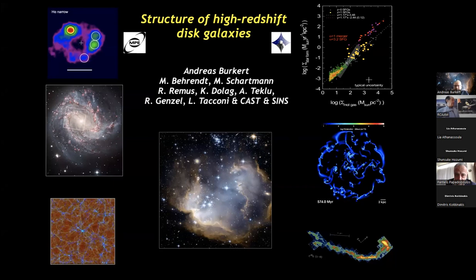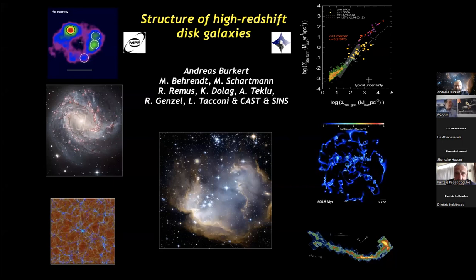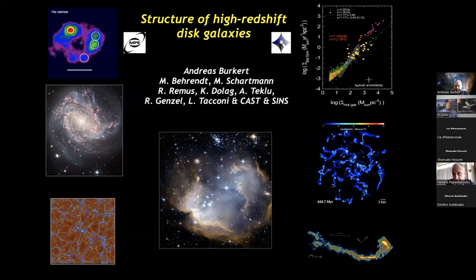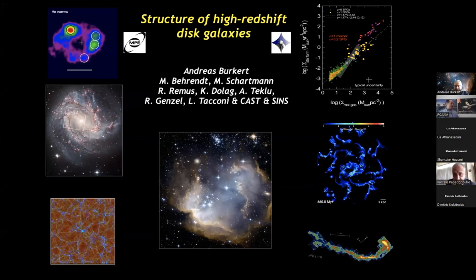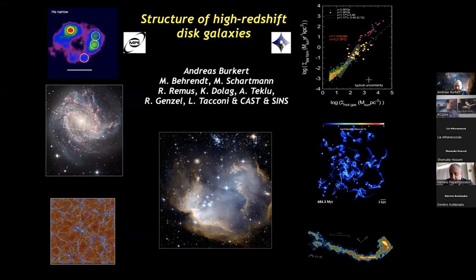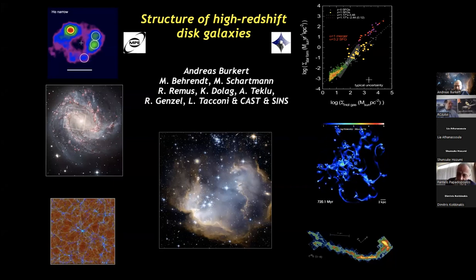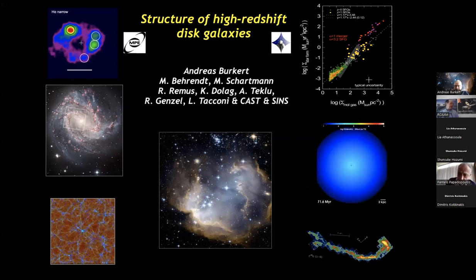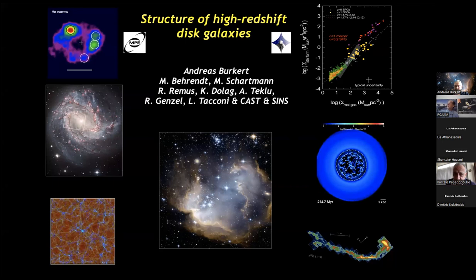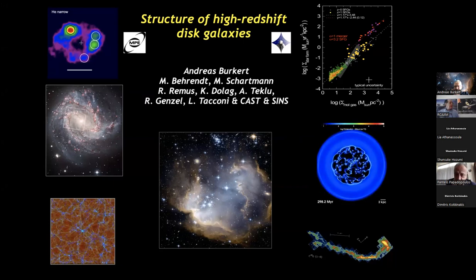It is a pleasure to have with us today Andy Burkert. Most of you know him — he is the chair of computational astrophysics at the University of Munich. You know his many contributions to dynamical astronomy and galactic dynamics, cosmology, galaxy formation, and the title already on the screen talks about the structure of high redshift disc galaxies, an extremely hot subject.